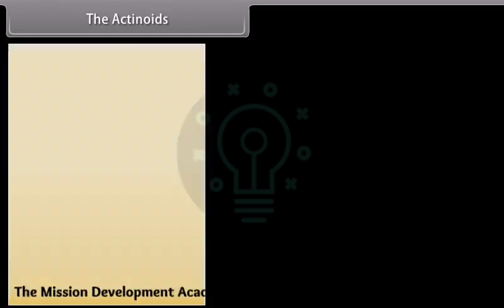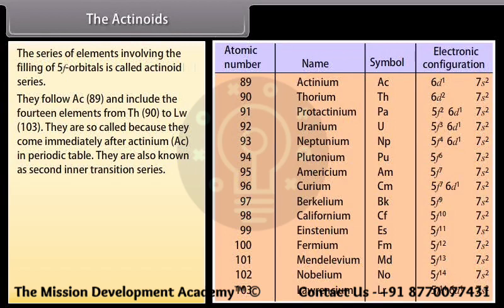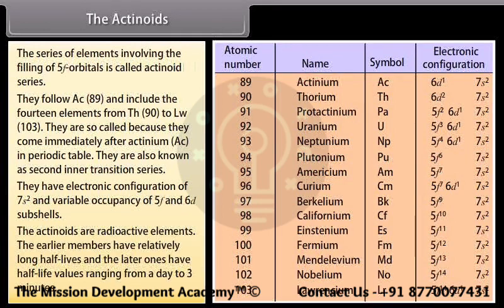The actinoids are the series of elements involving the filling of 5F orbitals. They follow actinium and include 14 elements from thorium to lawrencium. They are also known as the second inner transition series. They have an electronic configuration of 7s² with variable occupancy of 5f and 6d subshells. The actinoids are radioactive elements; the earlier members have relatively long half-lives while the latter ones have half-lives ranging from 1 day to 3 minutes.